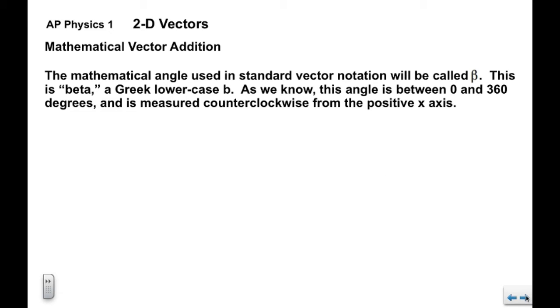Now the mathematical angle used in standard vector notation is going to be called beta. This is a Greek lowercase b. We know already that this angle is between 0 and 360 degrees and it's measured counterclockwise from the positive x axis.